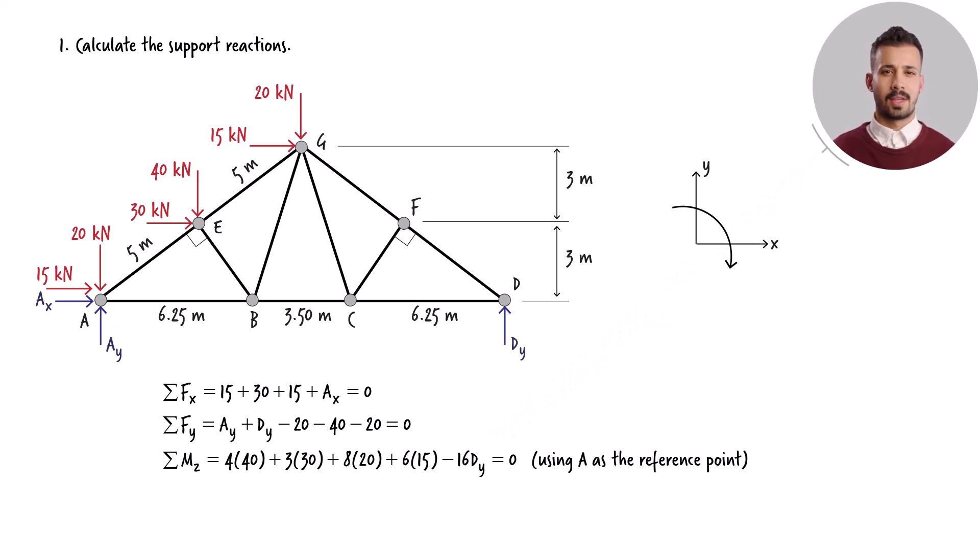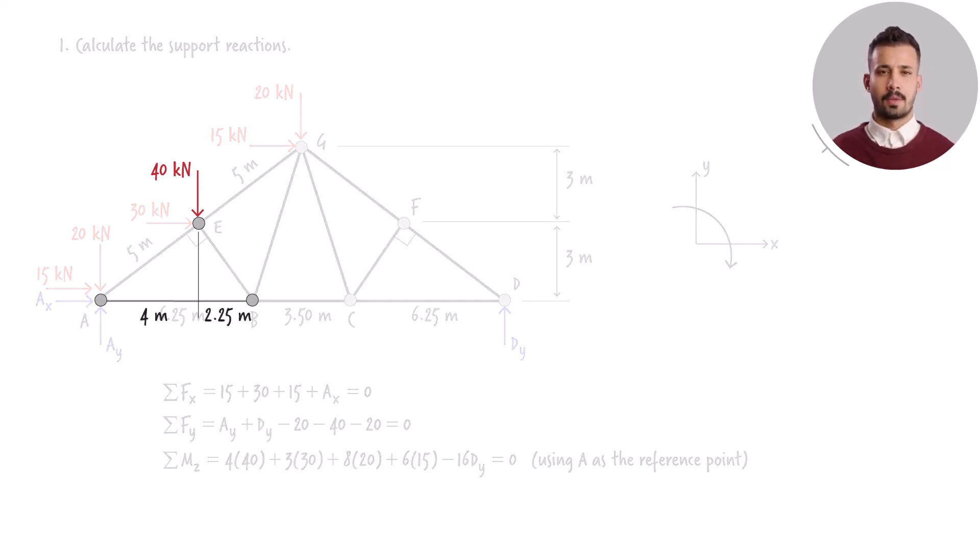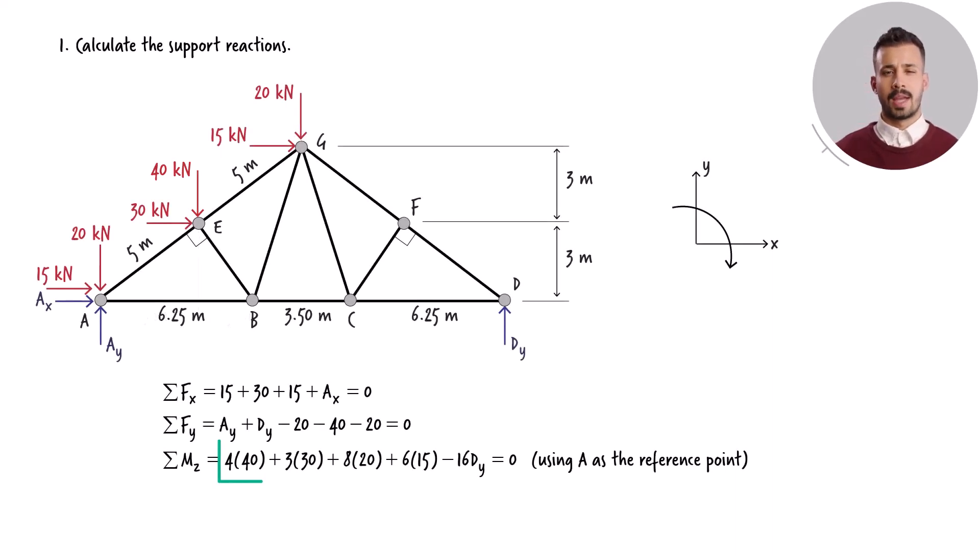The moment equation consists of five terms, with each term representing a non-zero moment of a force about point A. The load of 40 kN has a moment arm of 4 m. Given that this load generates a clockwise moment about point A, it results in a positive moment of 4 times 40.